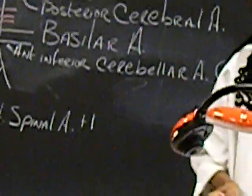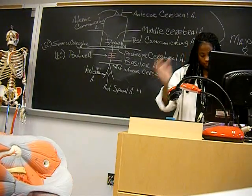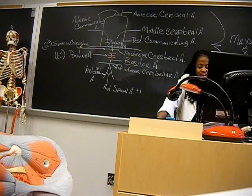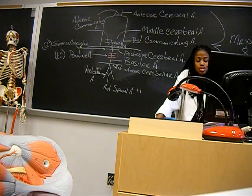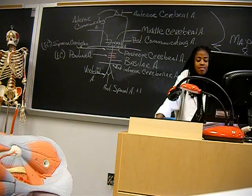Now we want to trace a drop of blood. Starting in the ascending aorta, trace a drop of blood to the frontal lobe on the left side, then back to the heart. I'm going to write it down.